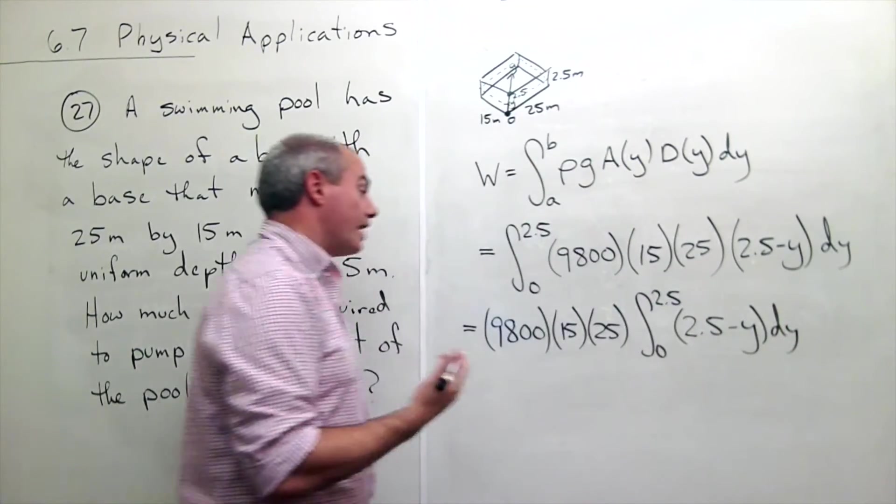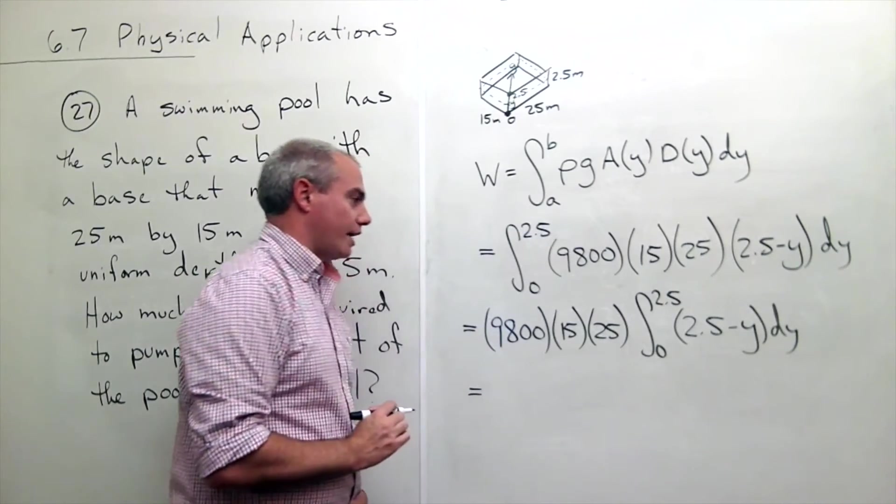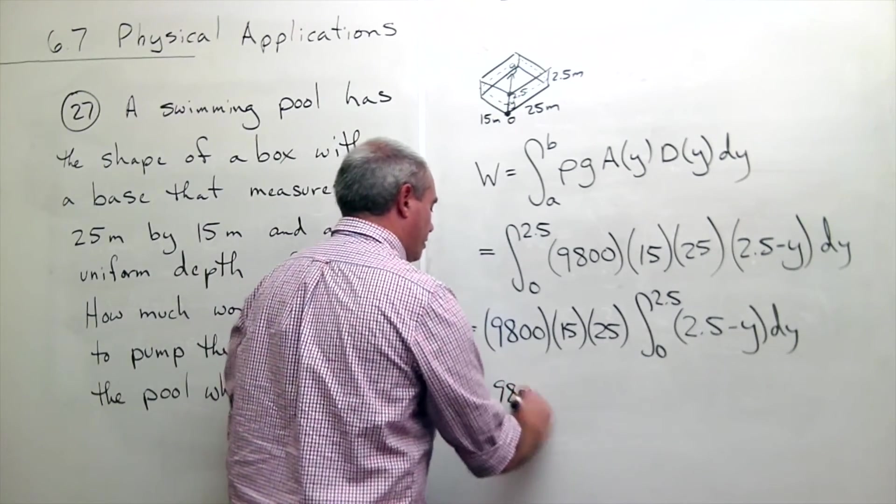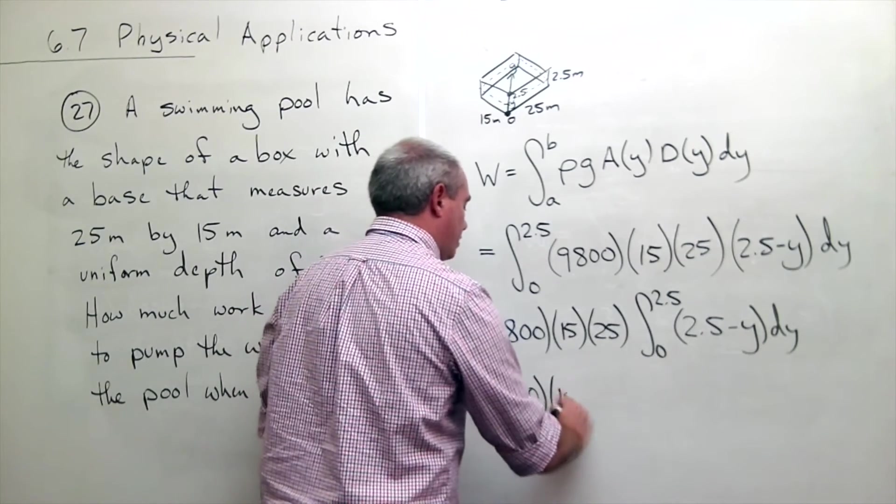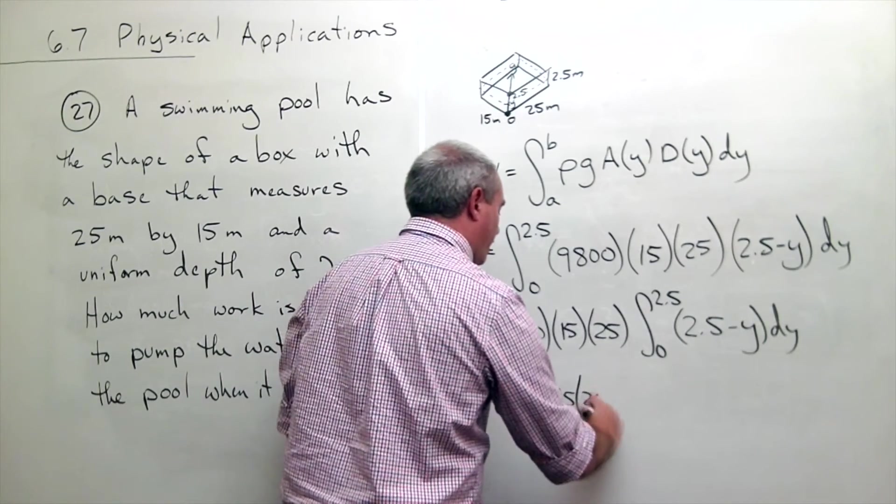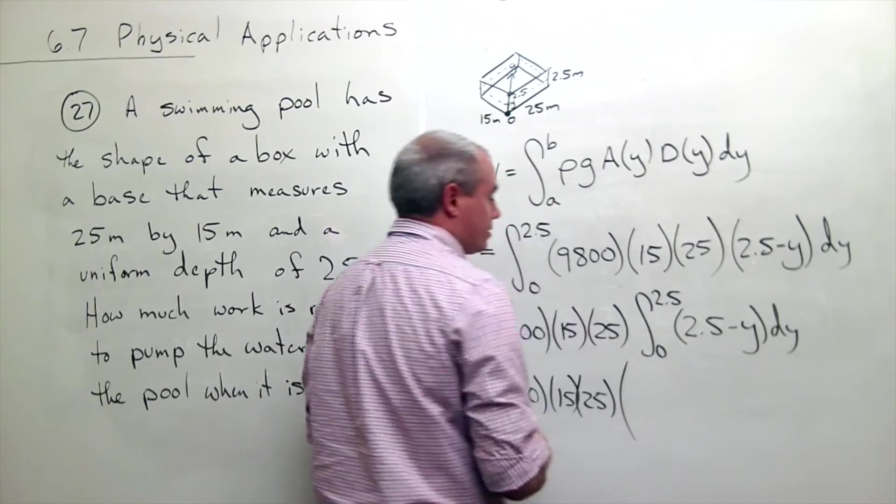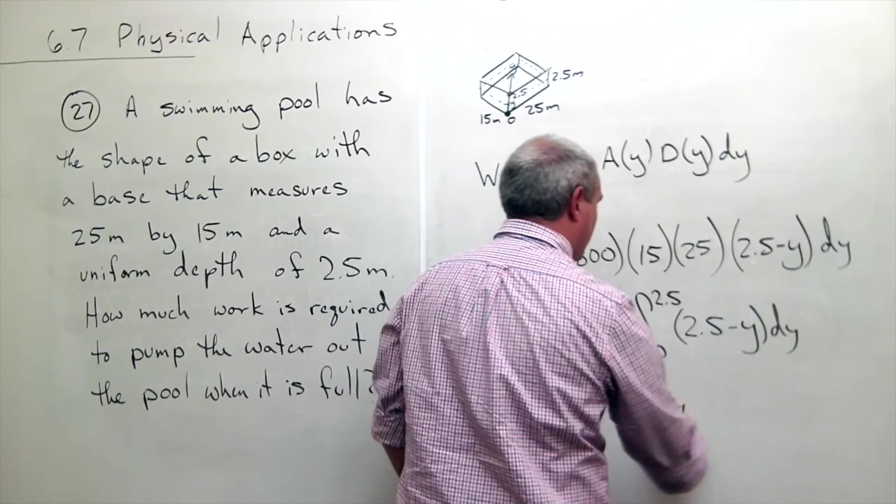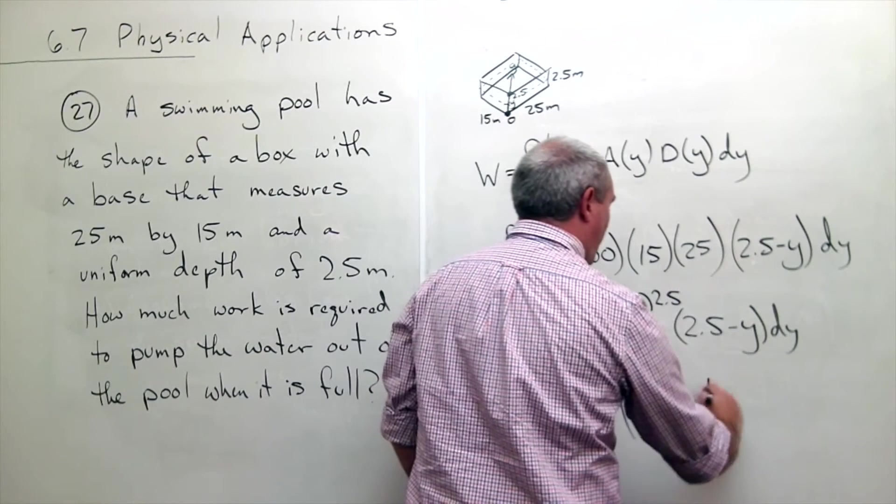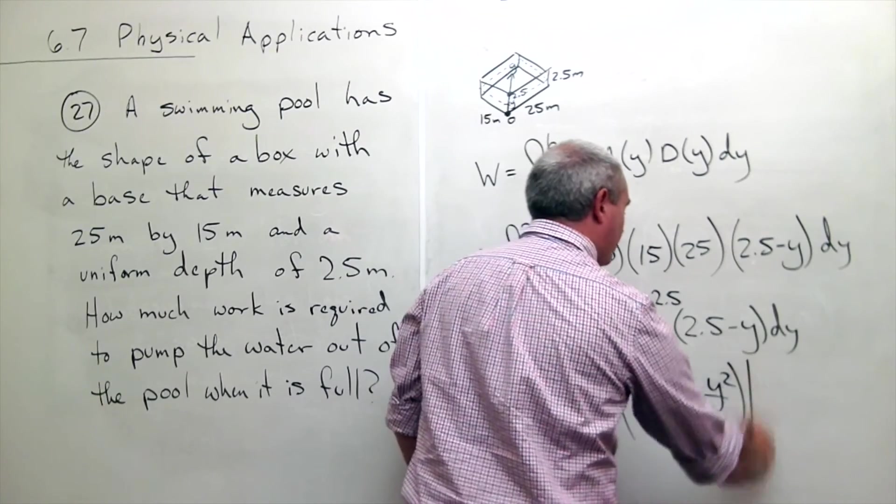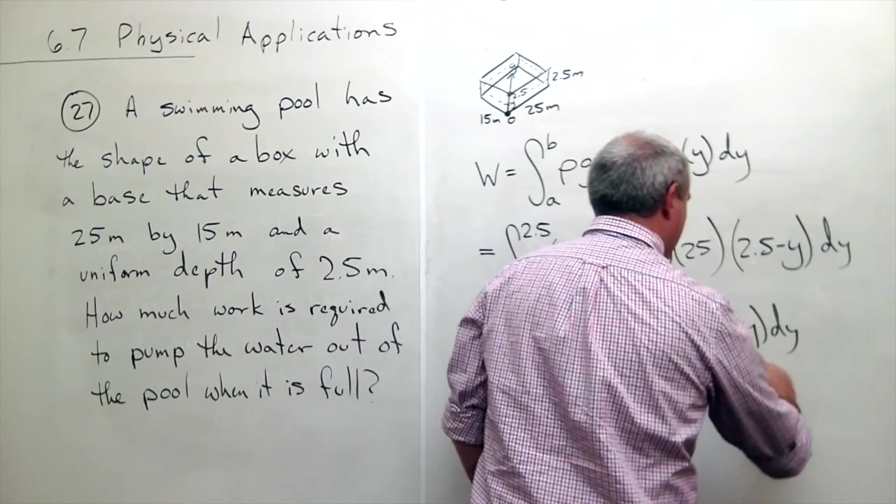Now I can take an antiderivative and I get 9,800 times 15 times 25 times 2.5y minus y squared over 2, evaluated from 0 to 2.5.